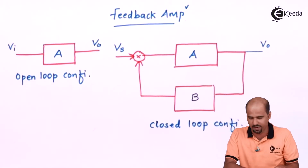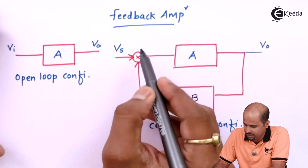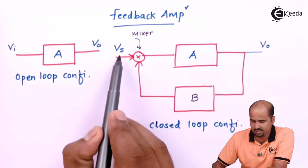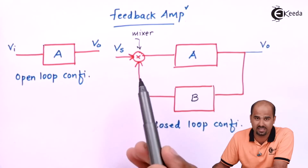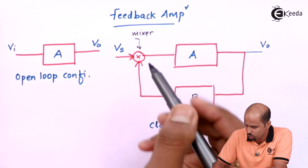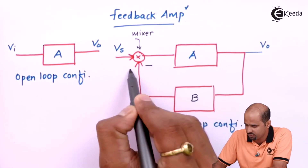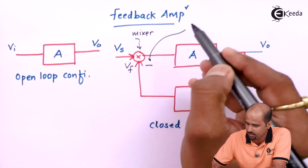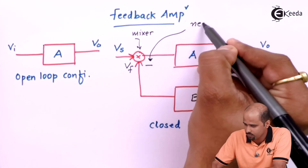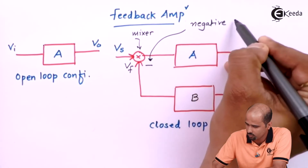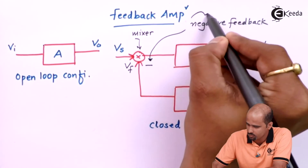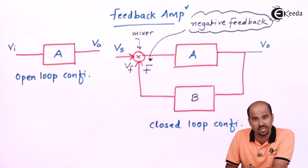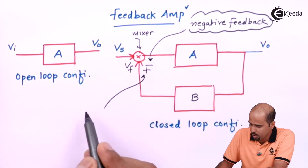The feedback amplifier includes a mixer block where I either add or subtract the source signal Vs with the feedback signal Vf. If I am subtracting Vs with Vf, that gives positive feedback. If I am adding the source signal with the feedback signal — i.e., Vs minus Vf — that is negative feedback.